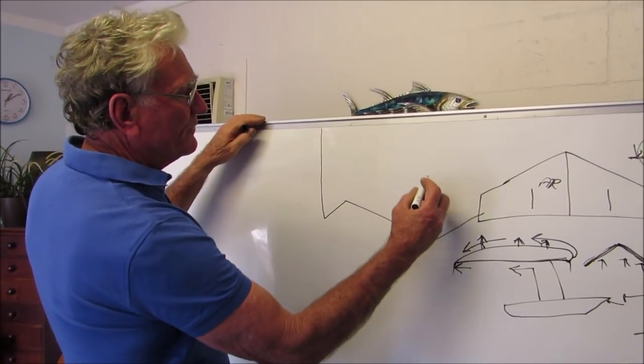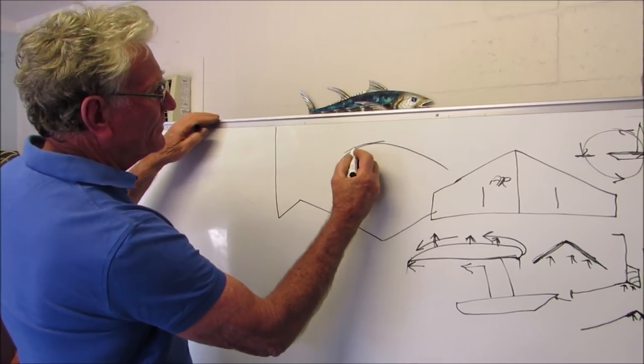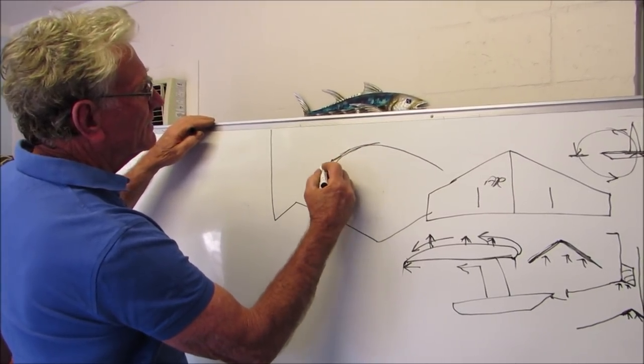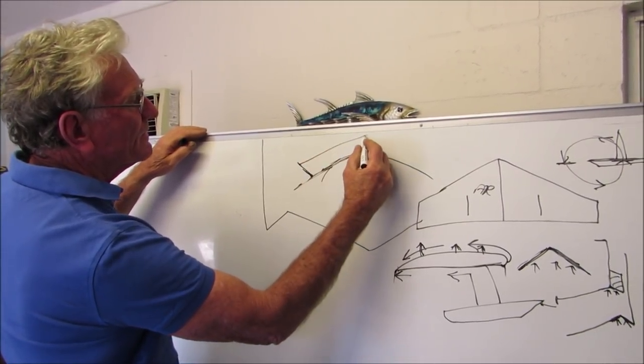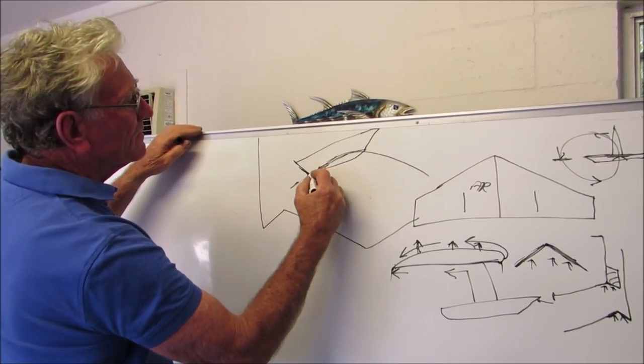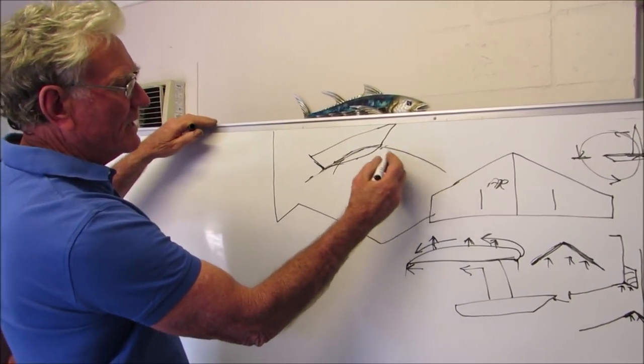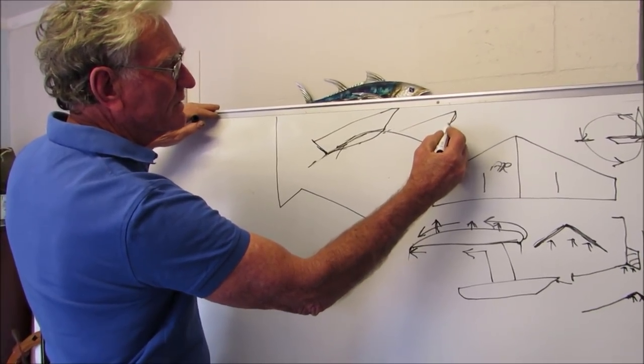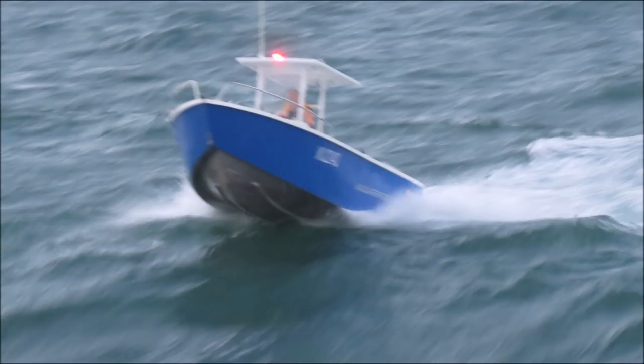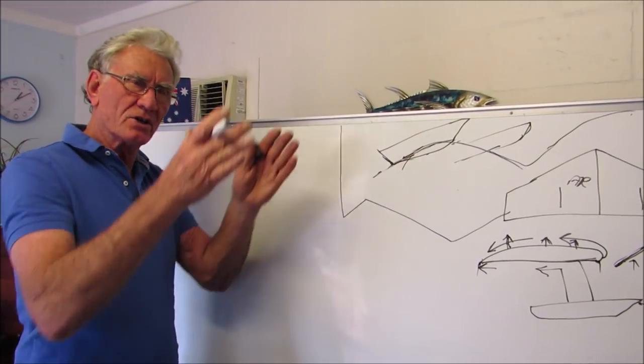When a boat goes over a wave, for argument's sake, I'll draw a swell like this. As the boat's going over the wave, here's your boat going over the wave. As it comes over, the bow of the boat is free-falling. For want of a better word, it's free-falling into the next swell. And this is where the pounding comes, whether it's chop, whether it's a swell. As it goes over one, it comes down. The front is not under control.